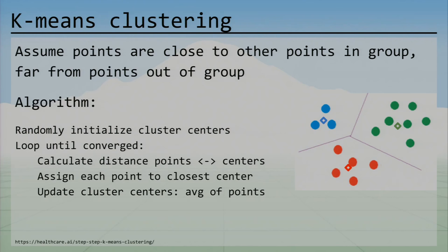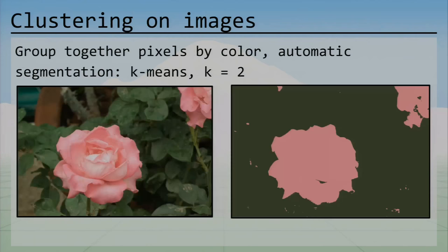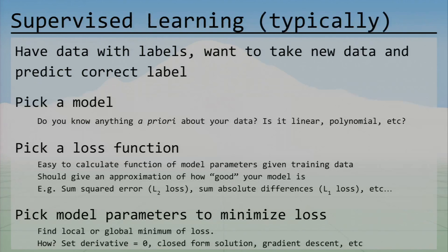With unsupervised learning, we talked about k-means clustering where we try to discover different clusters — different groups of data that look similar. The iterative algorithm estimates cluster centers in two steps: reassign all points to their closest cluster center, then move the cluster centers to the center of their assigned points. When we run k-means on images, we can get automatic segmentation by color — for example, telling apart pink pixels from green pixels with k equals 2.